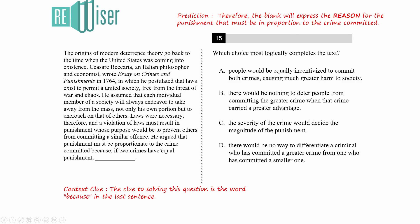So if two crimes have equal punishment, what would happen? The blank should clearly give us a reason explaining the consequence of two crimes having equal punishment. Let's see which option provides that reason.